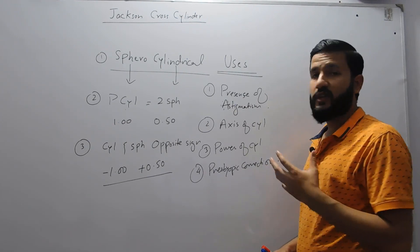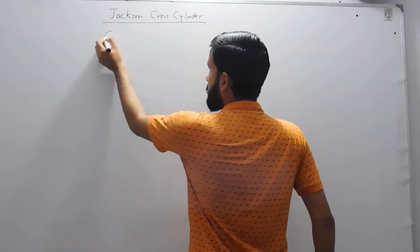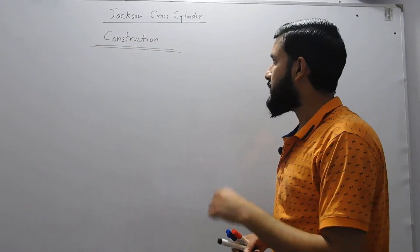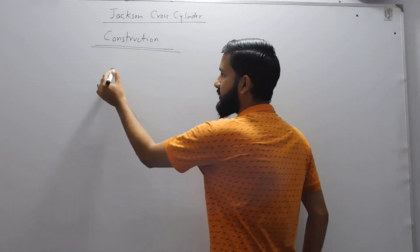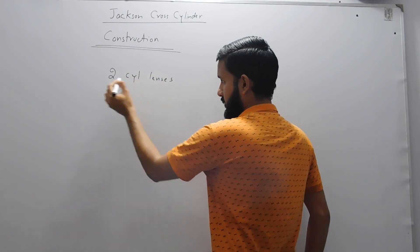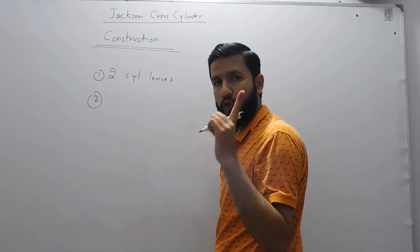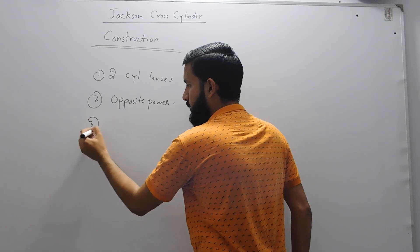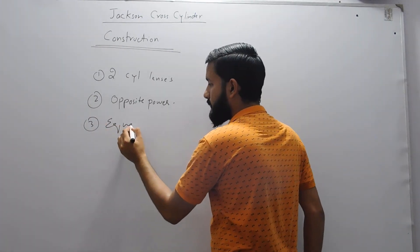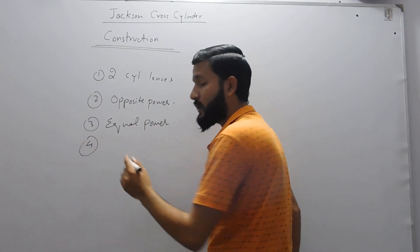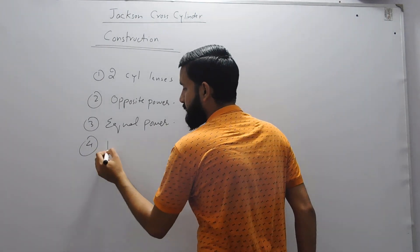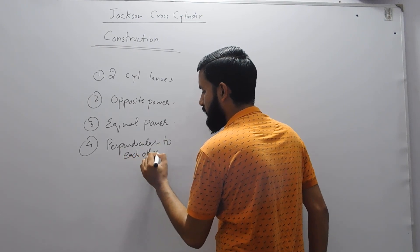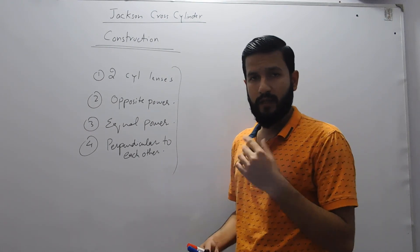Next we will move towards the construction of the cross cylinder — how it is made. To make a cross cylinder you simply need two cylindrical lenses. Number one, they should be of opposite power. Number two, they should have equal power. Number three, they should be held perpendicular to each other. If you follow these steps, you can easily make a Jackson Cross Cylinder.